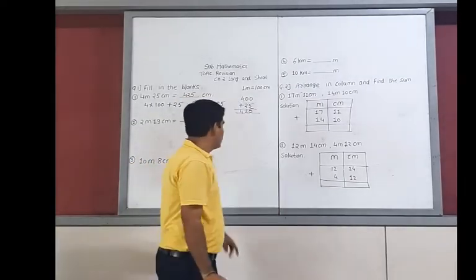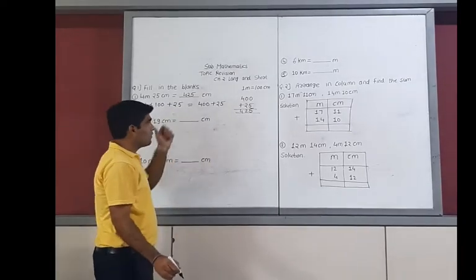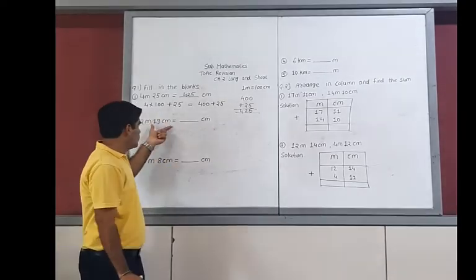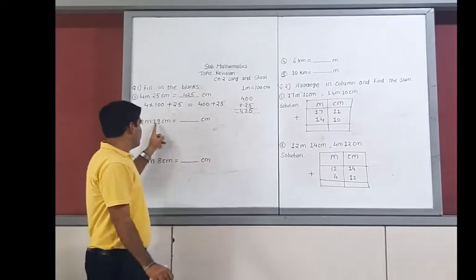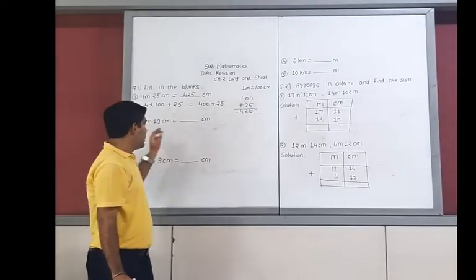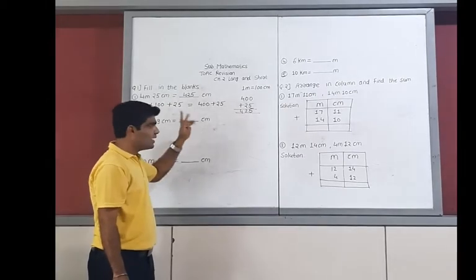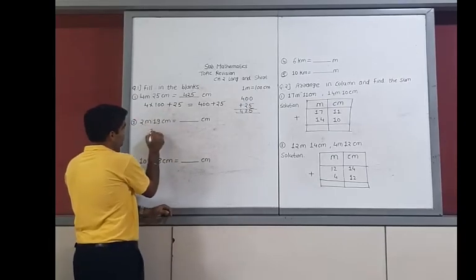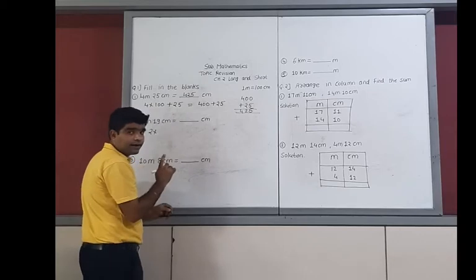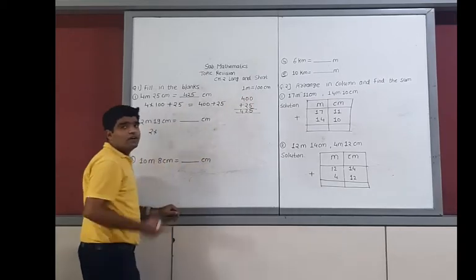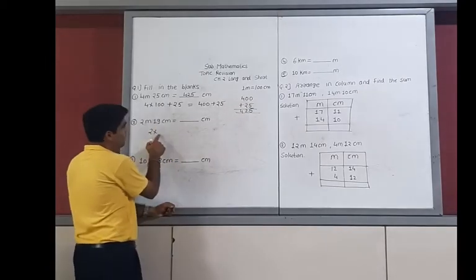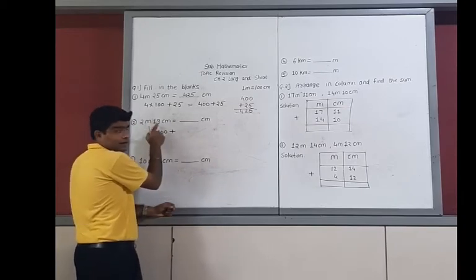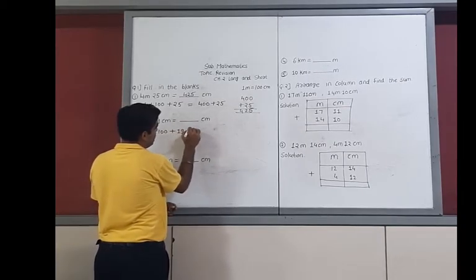This is our answer. Now we solve the second example, which is similar to the first. Here: 2 meters 19 centimeters converted into centimeters only. The 19 centimeters is already given, and we only need to convert 2 meters into centimeters. Similarly, here will be 2 multiplied by 100, because 1 meter equals 100 centimeters, and then add 19.